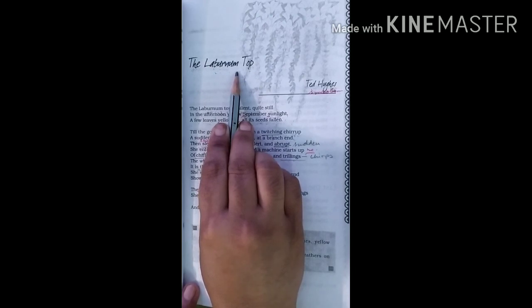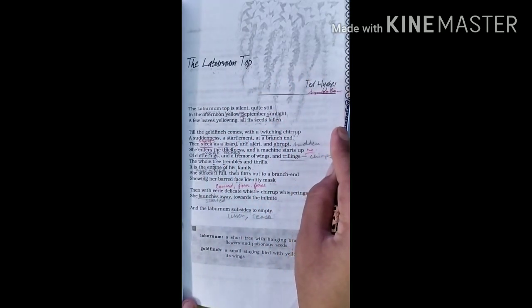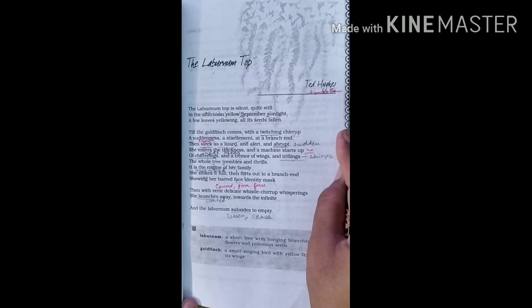The Laburnum tree is beautiful, large, but quite silent. However, the bird goldfinch appears from the sky and soon the tree is surrounded by the sweet chirrups of the bird and her young ones. It was previously dead and now it seems to be alive and shaking until the bird vanishes away again. Dead silence prevails.